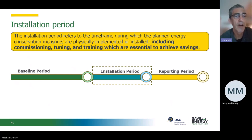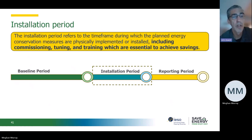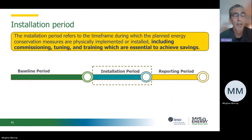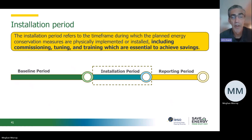The installation period: in a conventional project there's equipment put in — boilers, variable speed drives, heat recovery units, and so on. Part of that period is tuning, commissioning, and maybe training O&M procedures — whatever is needed so that the project is confirmed and operating as intended. That comprises the installation period before the M&V reporting period starts. It's important to think of all the facets of that — not just the install, but the tuning, commissioning, and commissioning reports to validate it.